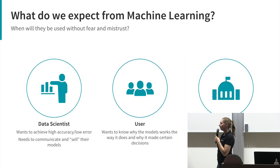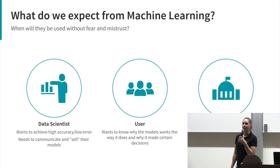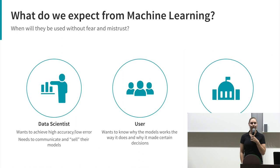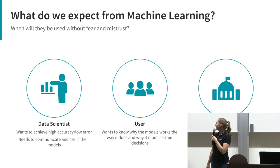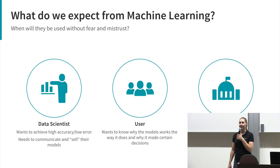Then there's the user — the person who would be affected by the decisions made by the model. The user usually wants to know why the model works in a certain way. If you think of a classical example like fraud detection, the user wants to know why a certain transaction or person has been classified as fraud and another has not. And then there's politics: when we talk about data safety, data regulations, and privacy, politicians often aren't well-versed in the theoretical aspects, but they have the task of protecting society from misuse and harm.